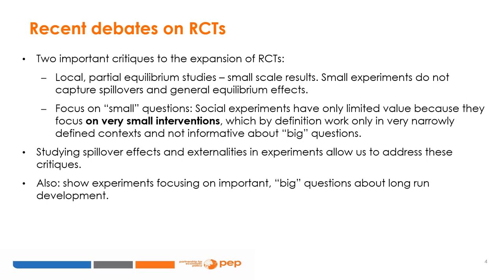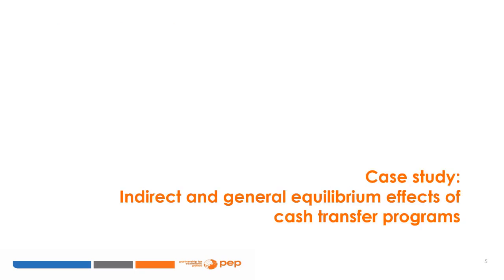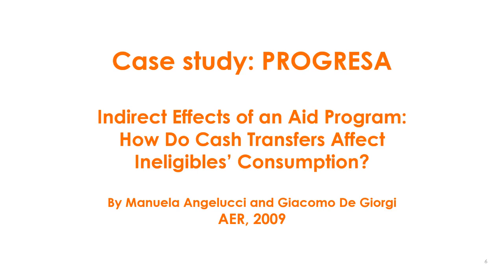In another module, we will cover experiments that focus on important questions about long-run development. We will start with a case study on indirect and general equilibrium effects of cash transfer programs, which have been very popular in the developing world in the last couple of decades. The first case study is based on the PROGRESSA program in Mexico and is based on a paper published in the American Economic Review called "Indirect Effects of an Aid Program: How do cash transfers affect ineligibles' consumption?"